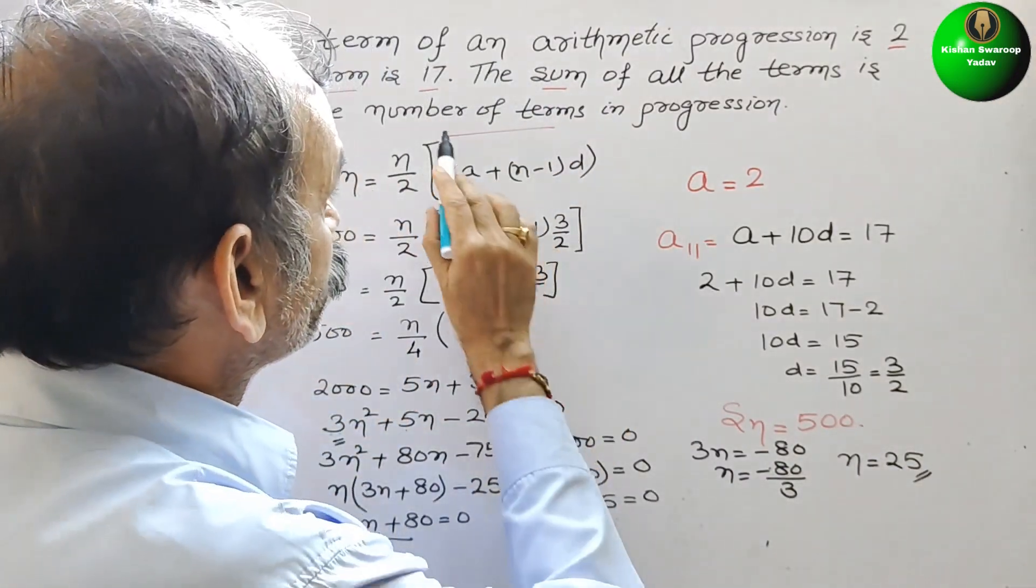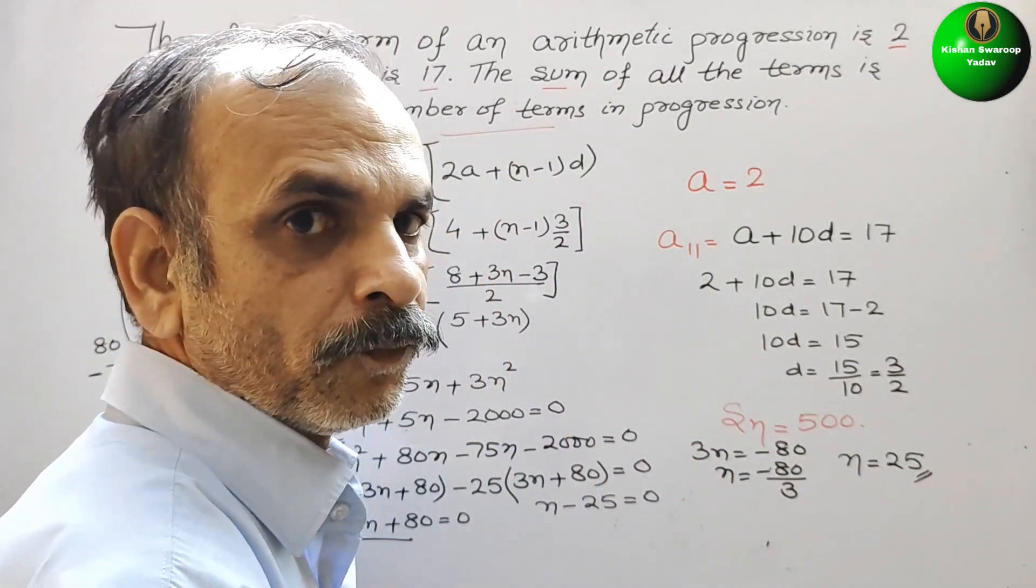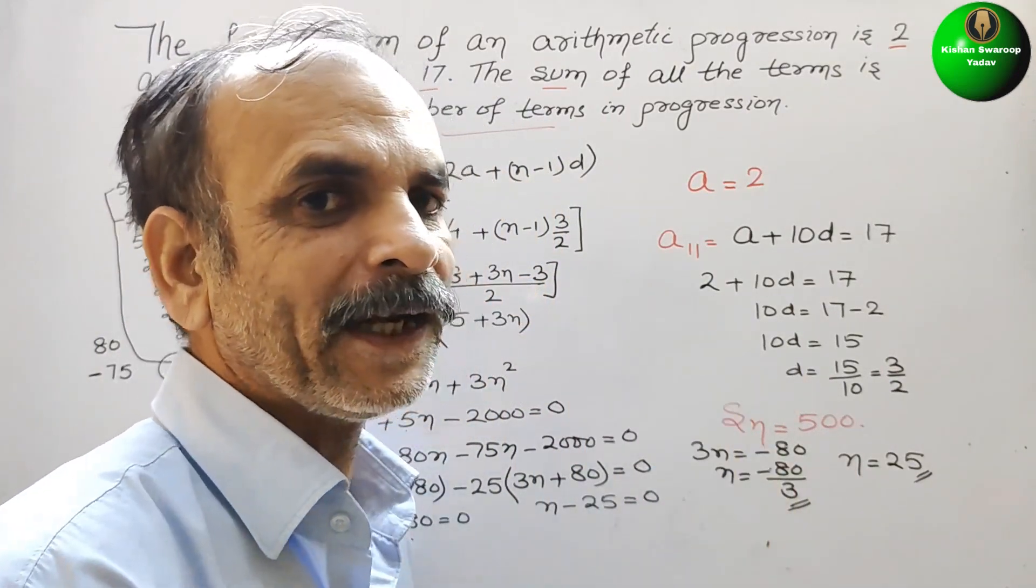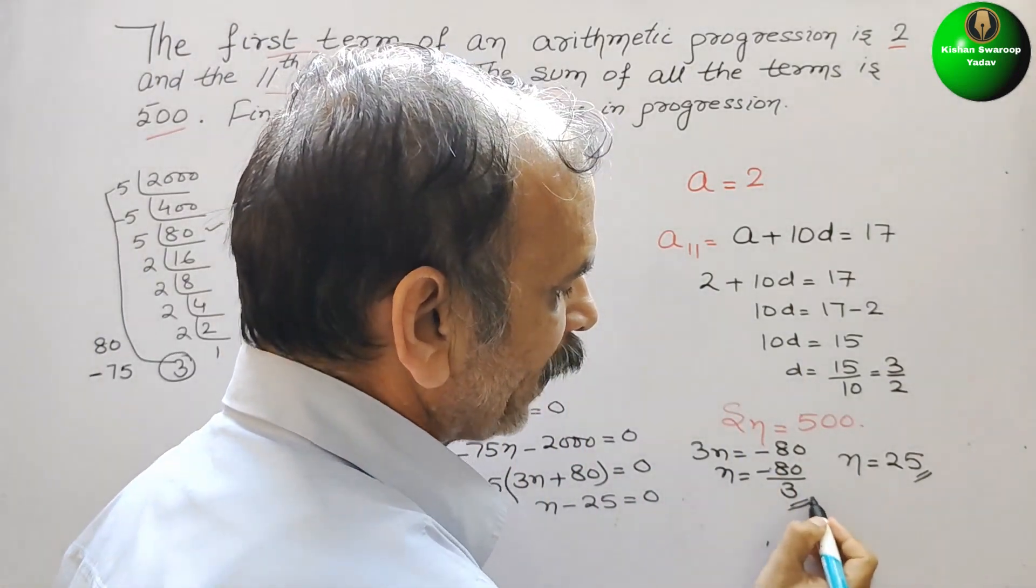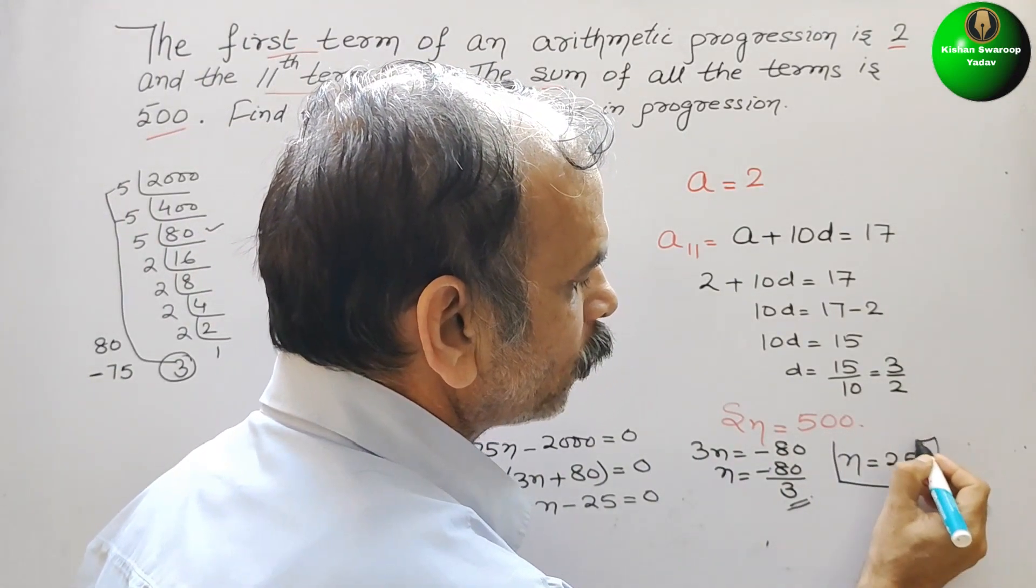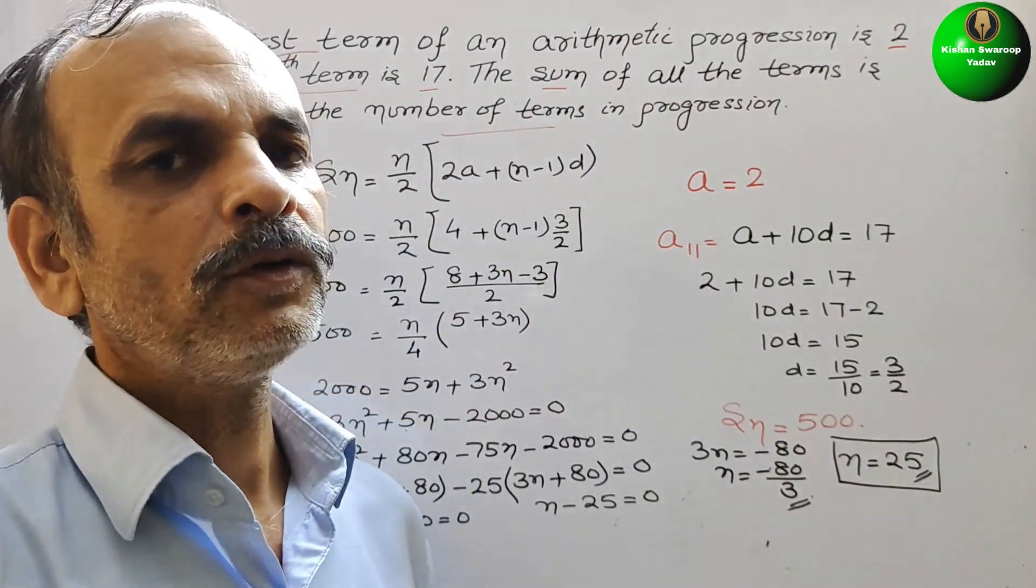So we know that number of terms is always in natural number. It is not in integer. There too is not negative. So therefore, we will eliminate this. And your answer is n is equal to 25. So like this we have to do it.